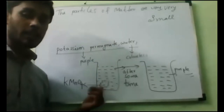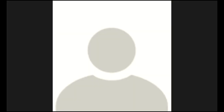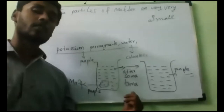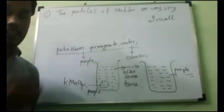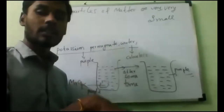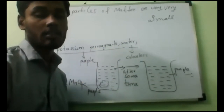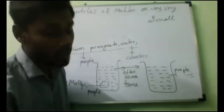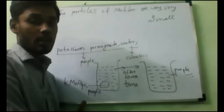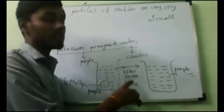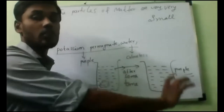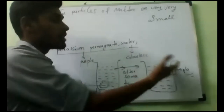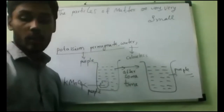If I keep the potassium permanganate, which is in purple color, and pour the water, potassium permanganate will slowly dissolve — like Rasna. If you add Rasna to water, the water turns into the Rasna color. If you add orange Rasna, it turns orange. Same way here, potassium permanganate is in purple color, so after pouring water, slowly it will dissolve and the complete water will turn into purple color after all the potassium permanganate dissolves.